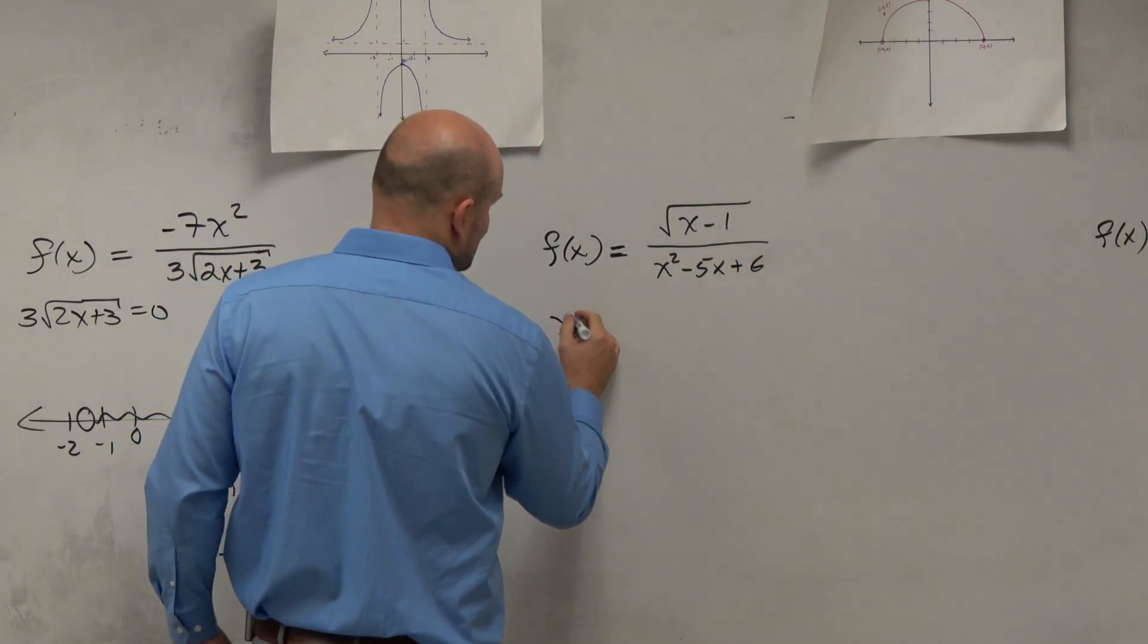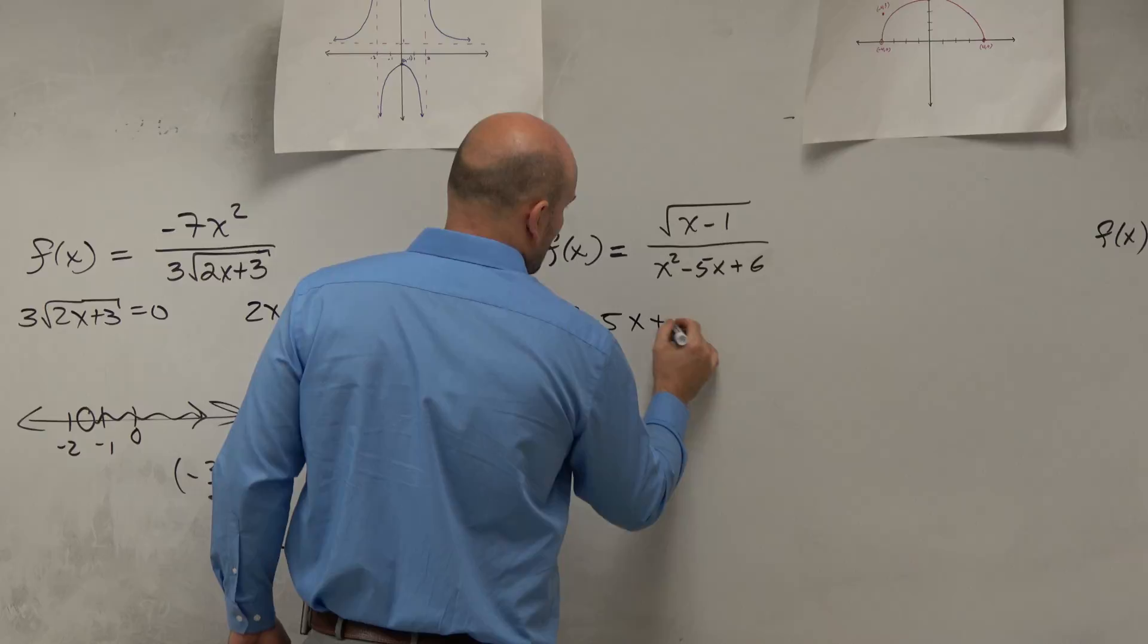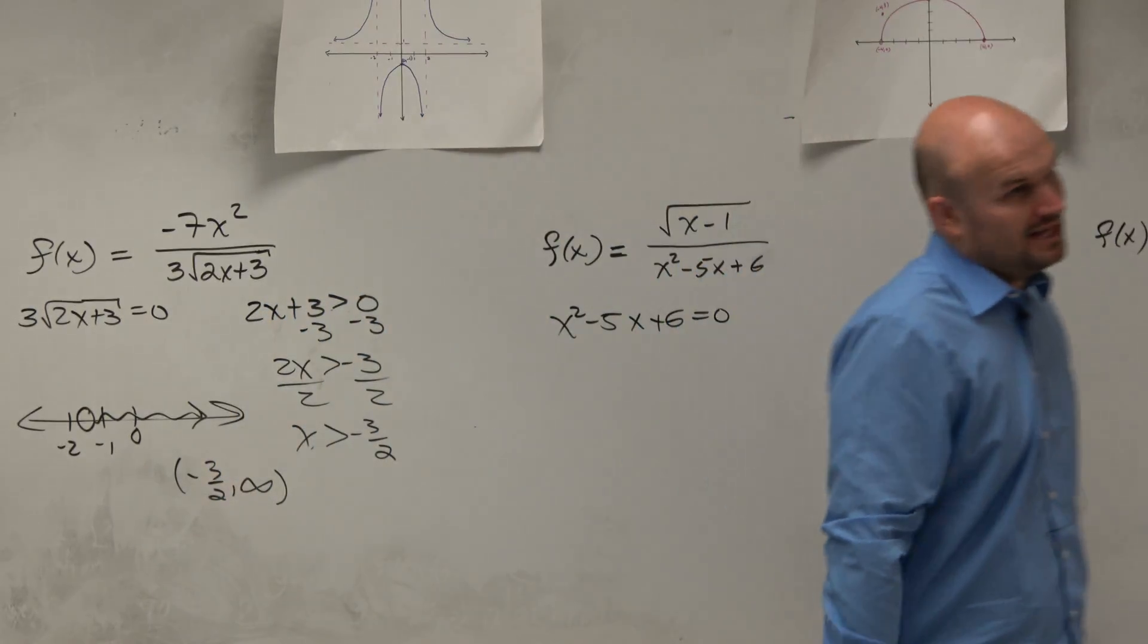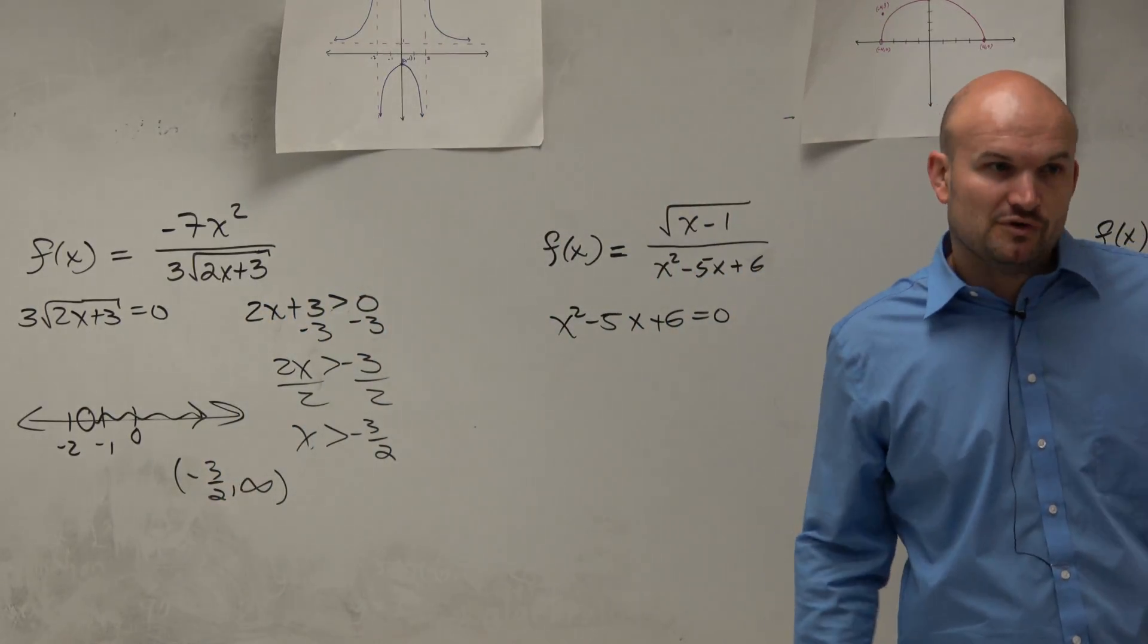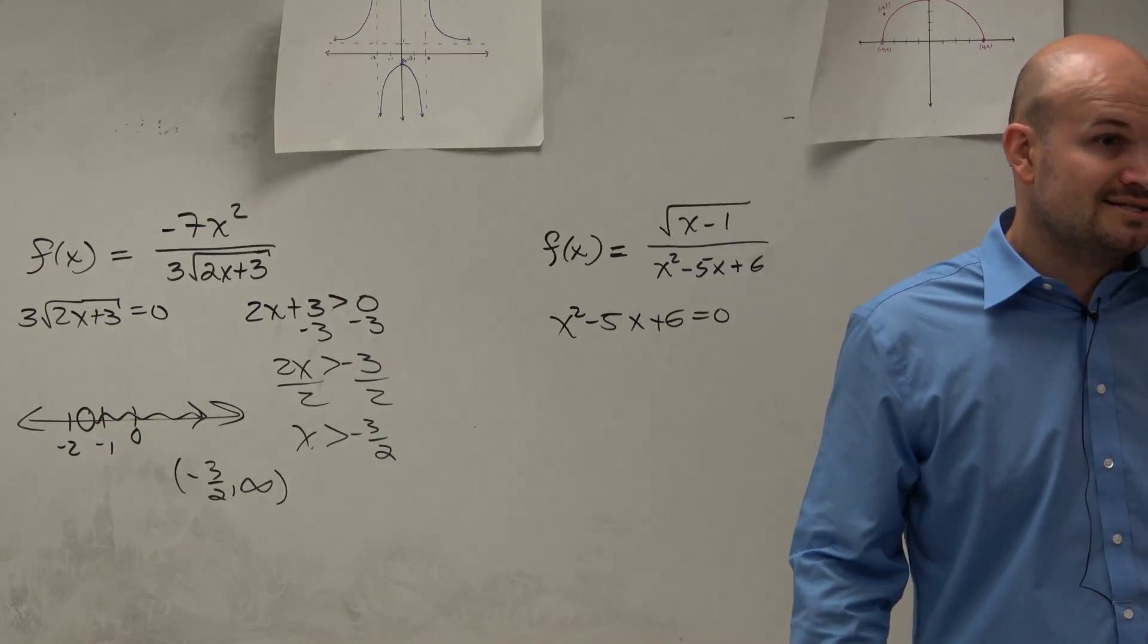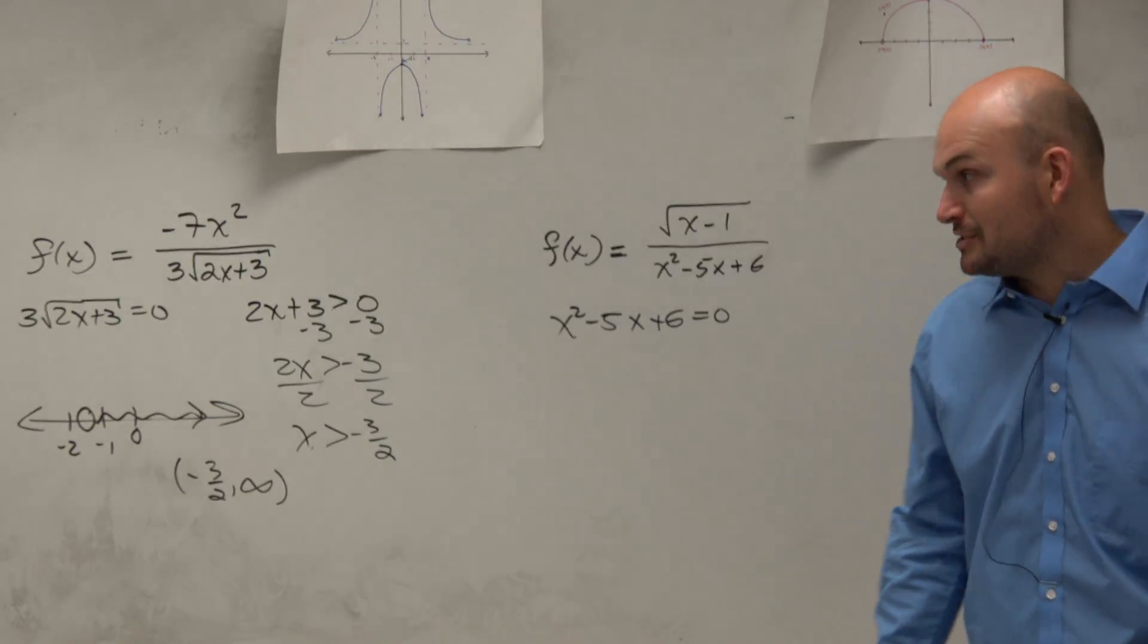So I find the denominator and I set it greater than, oh I'm sorry, equal to 0. I need to solve this and I need to factor it. And I know I haven't reviewed factoring, so I'm based off what you guys did for your summer packet and what you guys remember from Algebra 2.